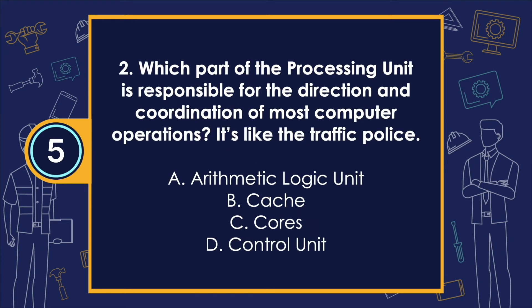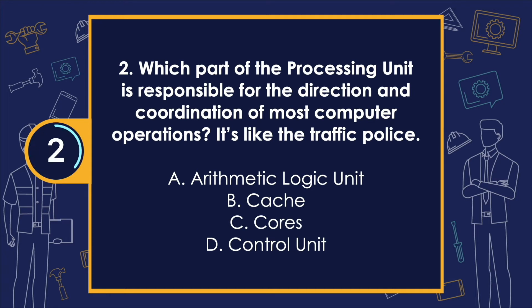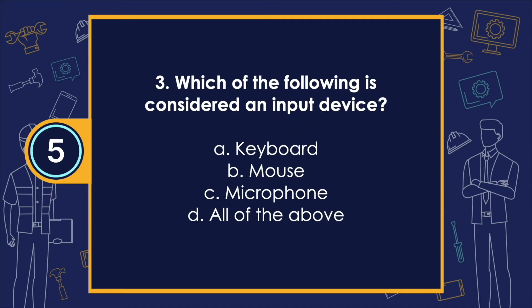Number 2: which part of the processing unit is responsible for the direction and coordination of most computer operations — like the traffic police? The correct answer is letter D — control unit.